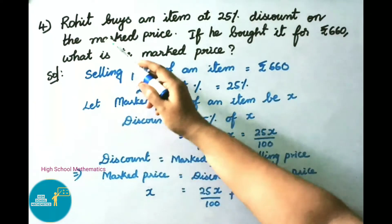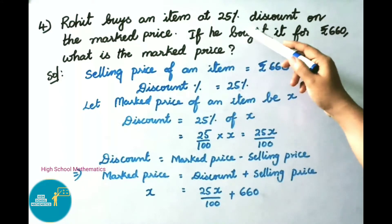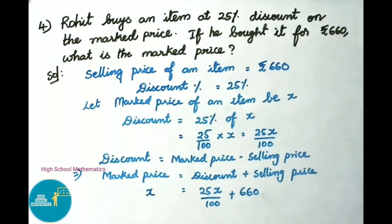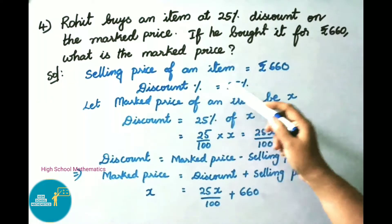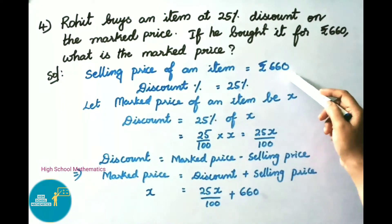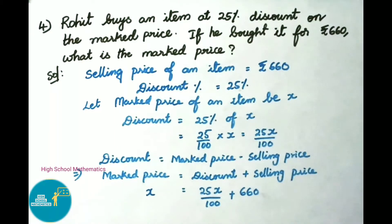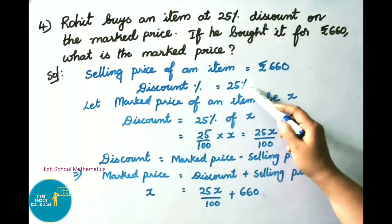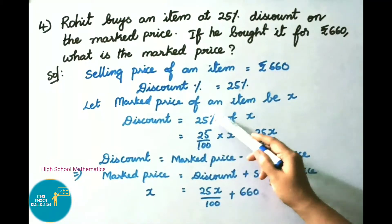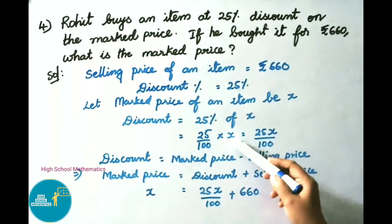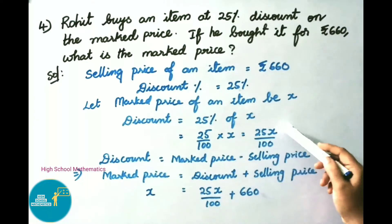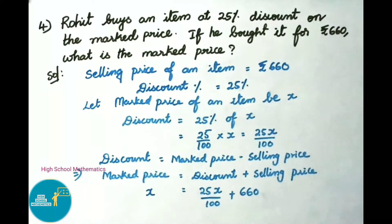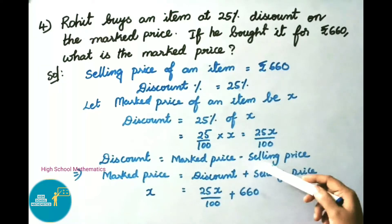Question number four: Rohit buys an item at 25% discount on the market price. If he bought it for 660 rupees, what is the market price? Selling price of item is 660 rupees, discount percentage is 25%. Let market price of item be x. Discount equals 25% of x, that is 25 by 100 into x, which equals 25x by 100.